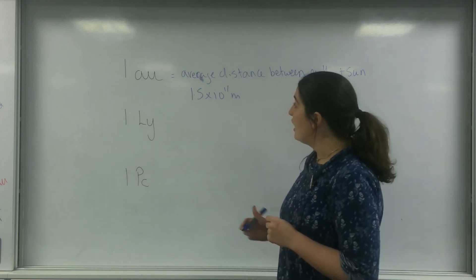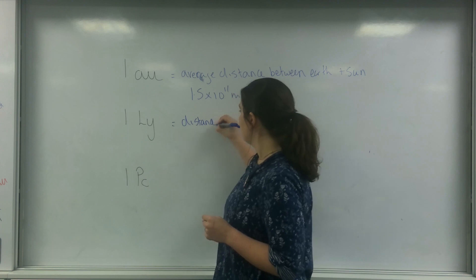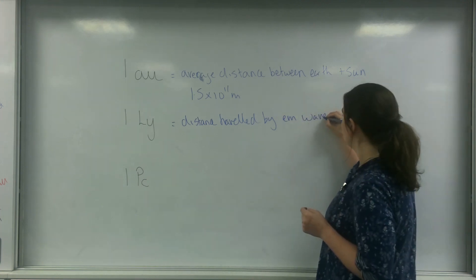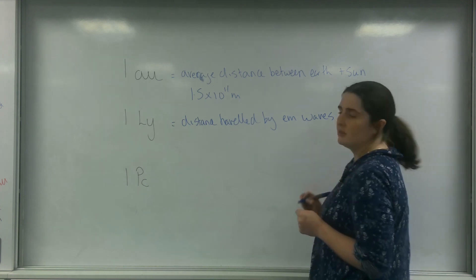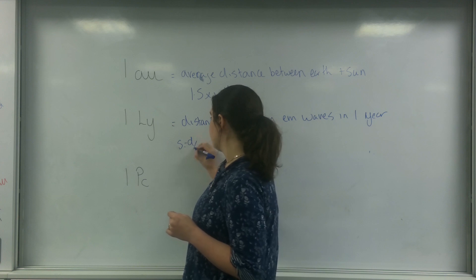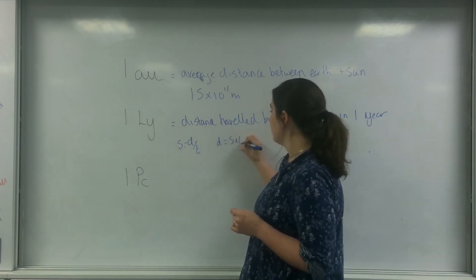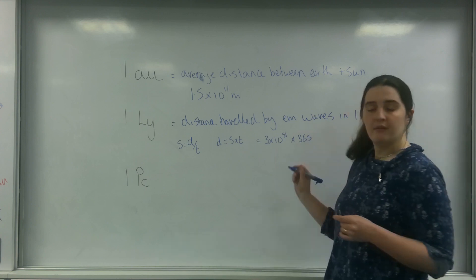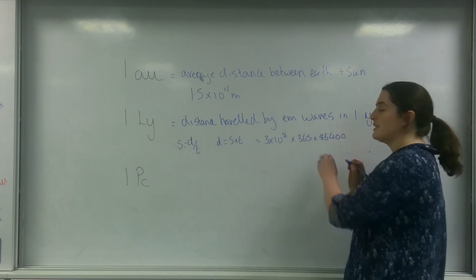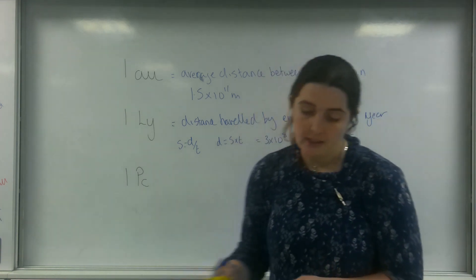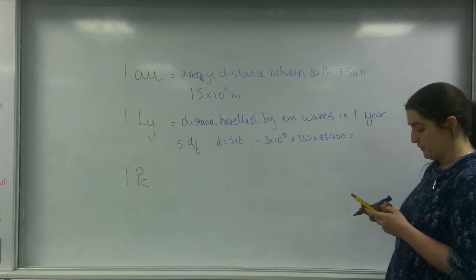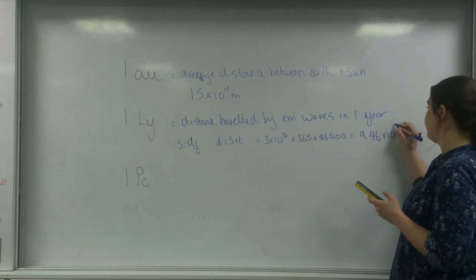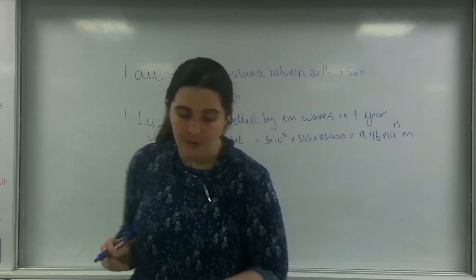One light year is the distance travelled by EM waves - electromagnetic waves - in one year. I know that speed is distance over time, so distance is speed times time. So I've got 3 times 10 to the 8, times 365, times 86,400 - that's the number of seconds in one day. That gives a value for a light year of 9.46 times 10 to the 15 metres, and that is what is on your data sheet.